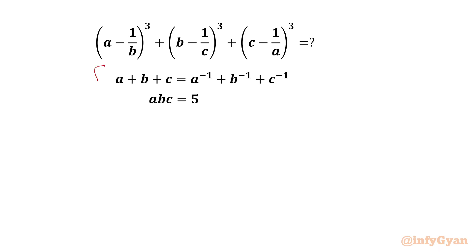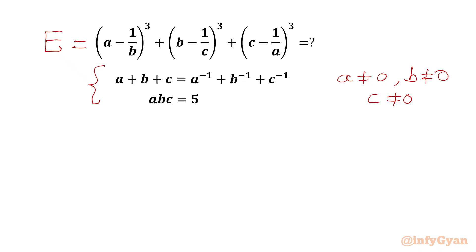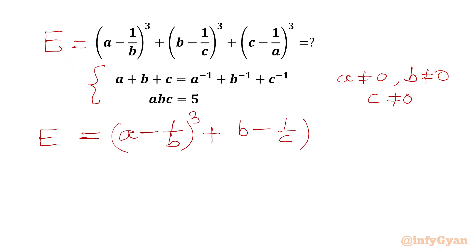So these two equations are known to us. From these equations I can conclude a, b, and c cannot be equal to 0. Let us consider the required expression equal to E. So E equals (a minus 1/b)³ plus (b minus 1/c)³ plus (c minus 1/a)³.